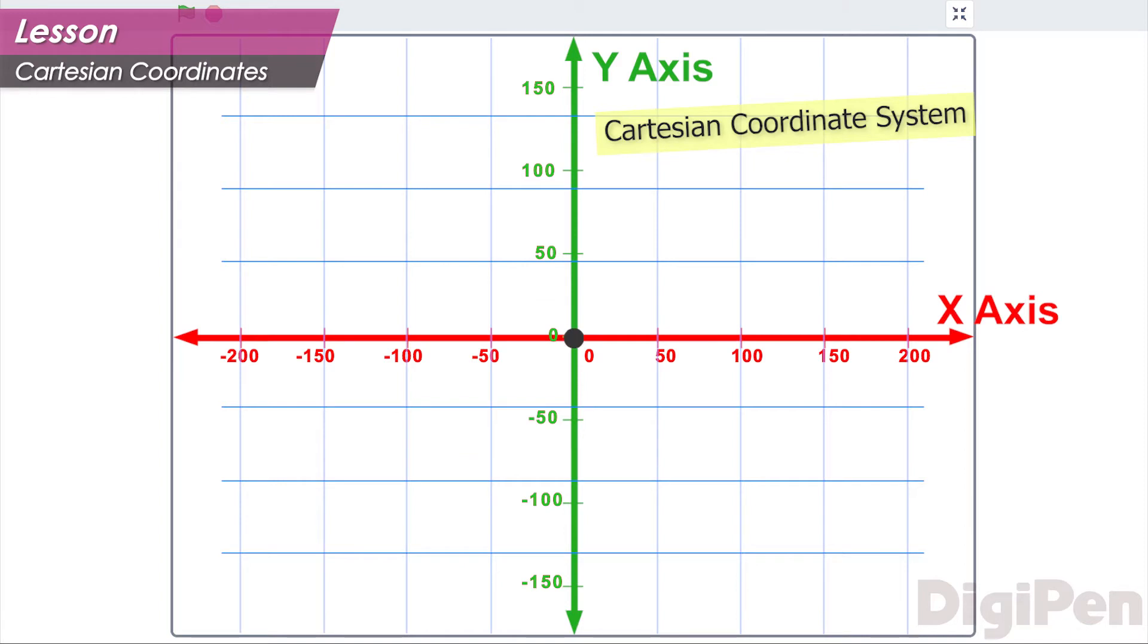The axes cross at the point where they both have the value zero. This crossing point is called the origin of the coordinate system.